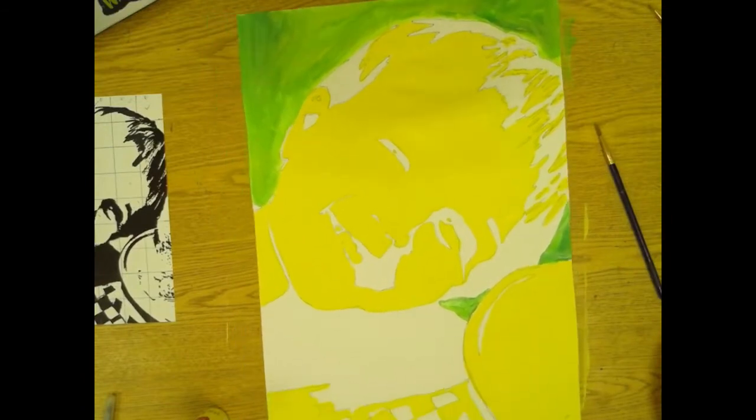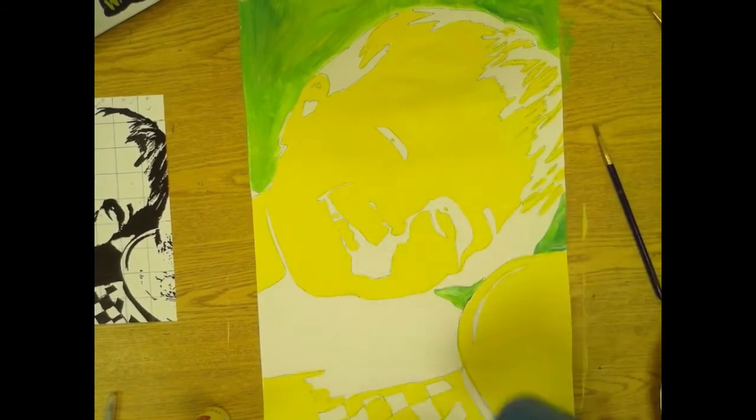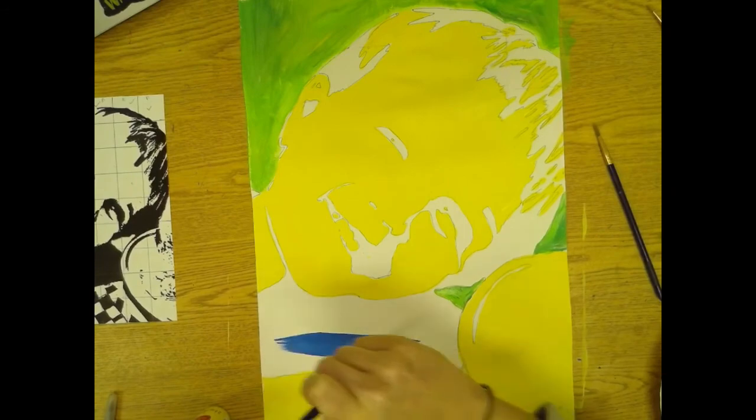And then finally the last part is to add your darkest value. So again, blue is my darkest value. Start with your large areas first, moving on to the details.